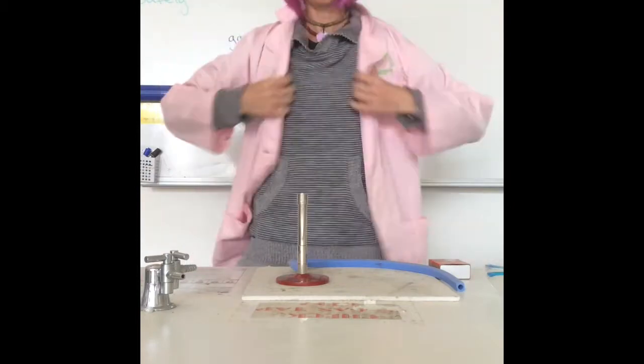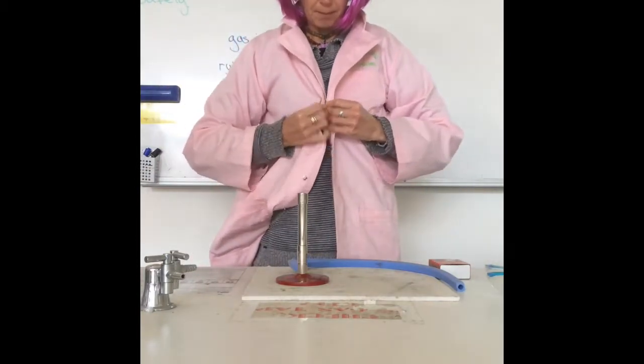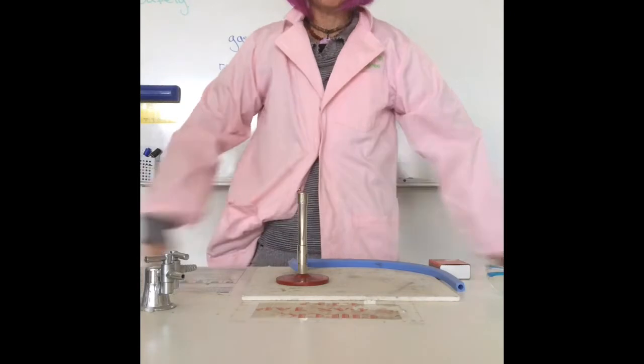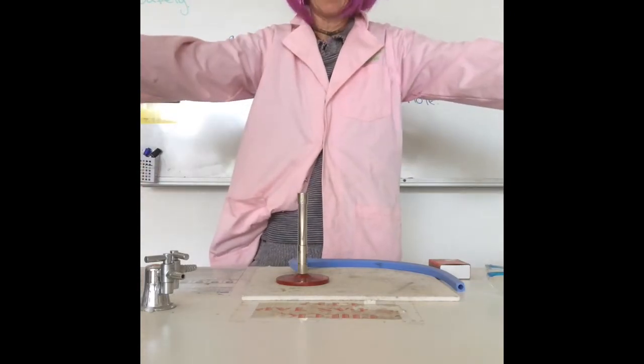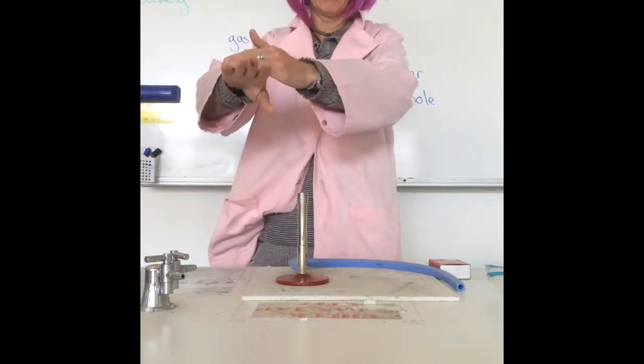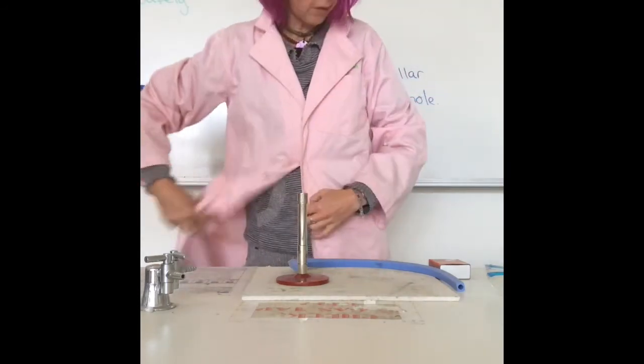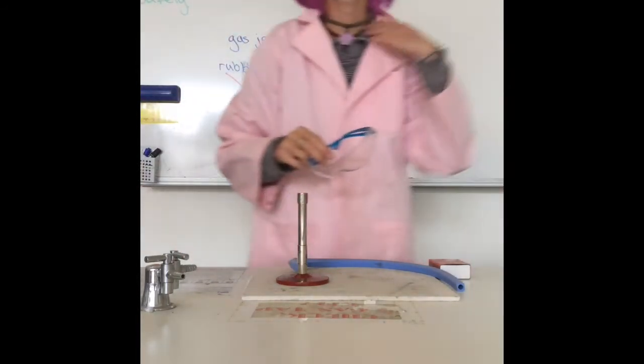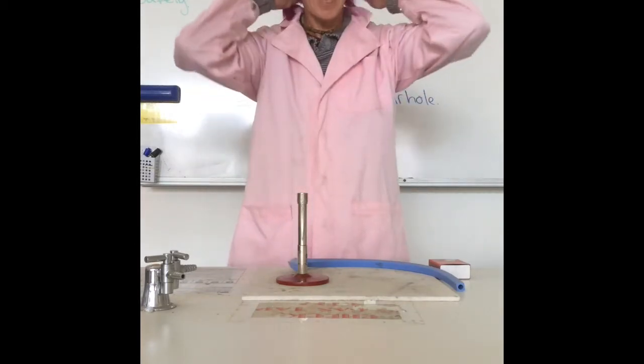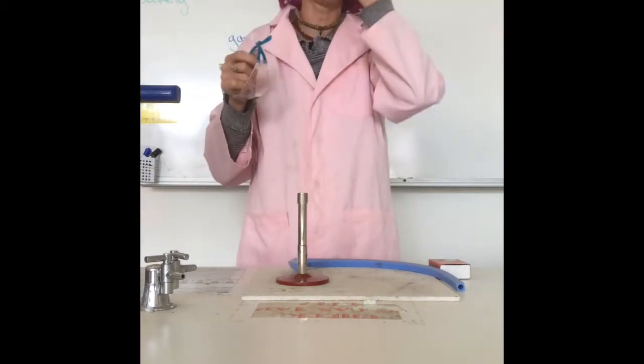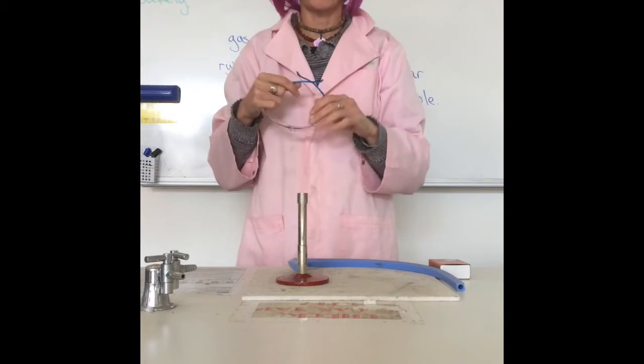Lab coat on. Top two buttons done up. And what you need to be careful with your lab coat is that the sleeves don't go over your hands. I've got my lab coat on. My hair is short enough. A hair band would be good if you've got long hair. Now's the time to tie it back.